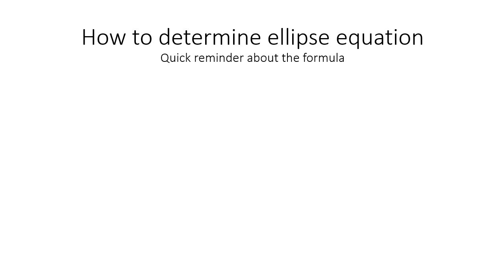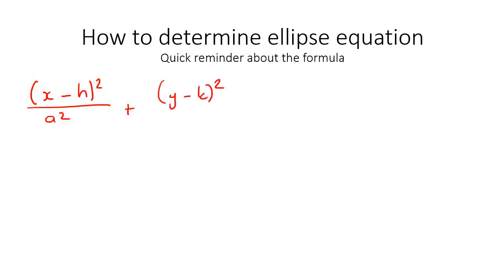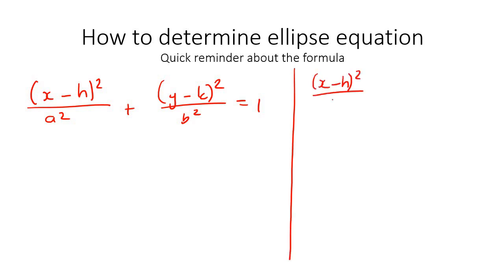In the previous lesson, we were introduced to an ellipse, and we said that the equation of an ellipse goes like this: x minus h squared over a squared plus y minus k squared over b squared is equal to 1. And we said that sometimes the x minus h will be above the b squared, and then the y minus k will have the a squared.